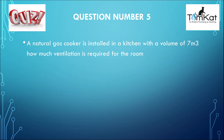Now how are we doing? Have we got four out of four so far? Well let's look at question number five: a natural gas cooker is installed in a kitchen with a volume of 7 metres cubed — how much ventilation is required for the room? The answer is B — 50 centimetres squared. That is the answer for question number five.